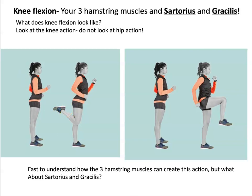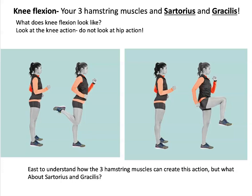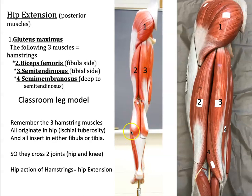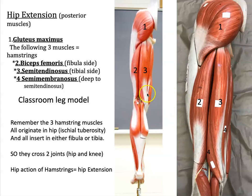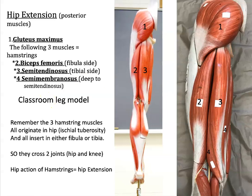Let me show you the hamstrings one more time. Here are your hammies. On the lateral side is your BFF — biceps femoris. It is next to semitendinosus, and deep to semitendinosus is semimembranosus. So those are your three hamstring muscles.